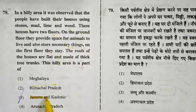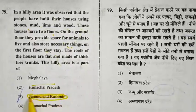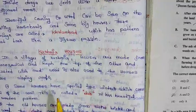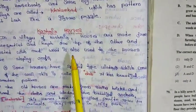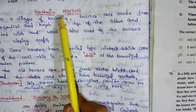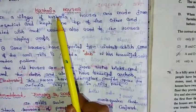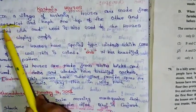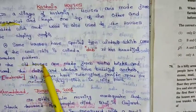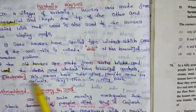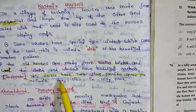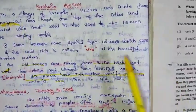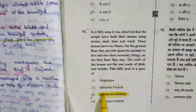So, the correct answer is Jammu and Kashmir. This is a topic of Kashmir houses. In the lesson, the villages of Kashmir — houses are made from stones and mud. The old houses are made from stones, bricks and wood. These houses have two floors and provide space for animals. This is a topic of Jammu and Kashmir.